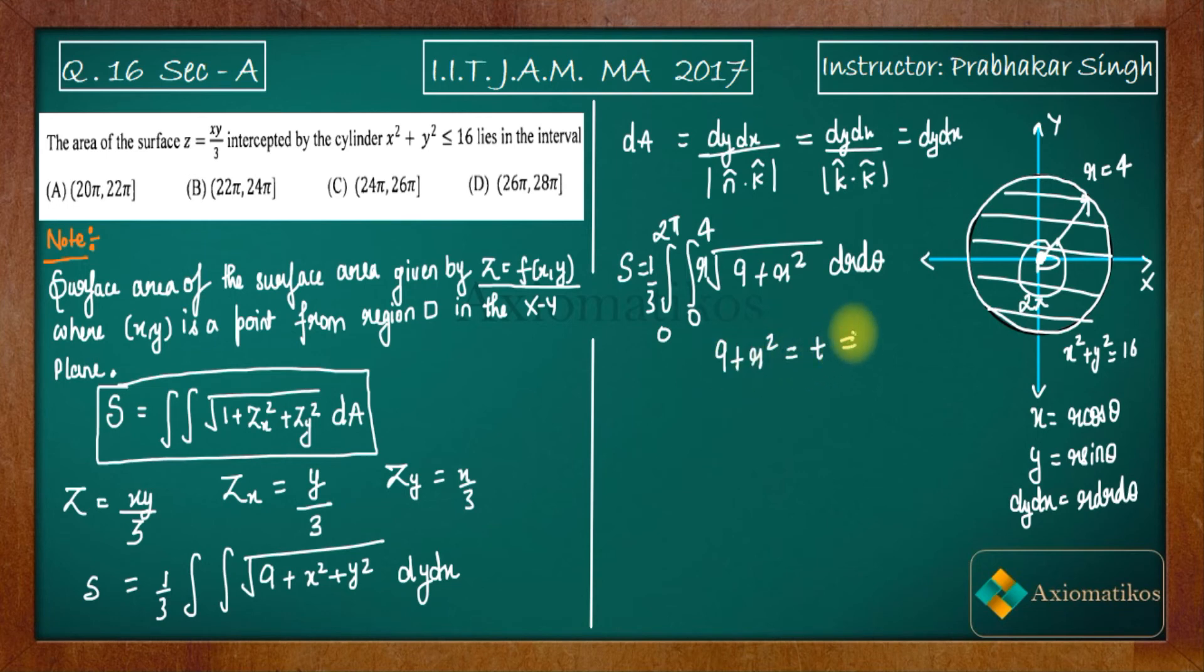You are going to solve it by just substituting 9 plus R square equals T. So if 9 plus R square equals T, 2R dR will be dT. So finally R and dR will be dT by 2. So S will be 0 to 2π, 1 by 3 is also there. Now you have to change the limit also. So when R is 0, what is T? Just put it here. T will be 9. When R is 4, what is T? It will be 25. Now you will get root of T. This is 9 plus R square is T. So root of T. RdR will be dT by 2 dθ. This is what you will get.